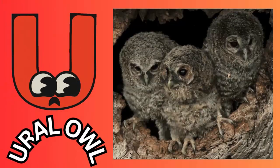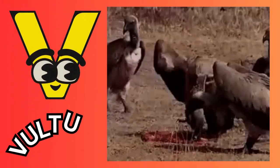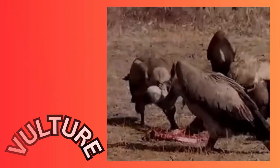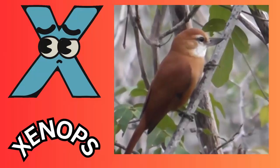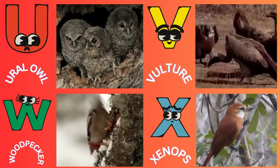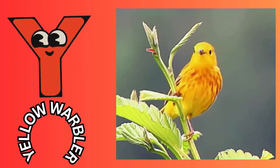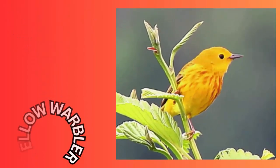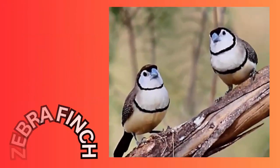U. U for Ural Owl. V. V for Vulture. W. W for Woodpecker. X. X for Xenops. Y. Y for Yellow Warbler. Z. Z for Zebra Finch.